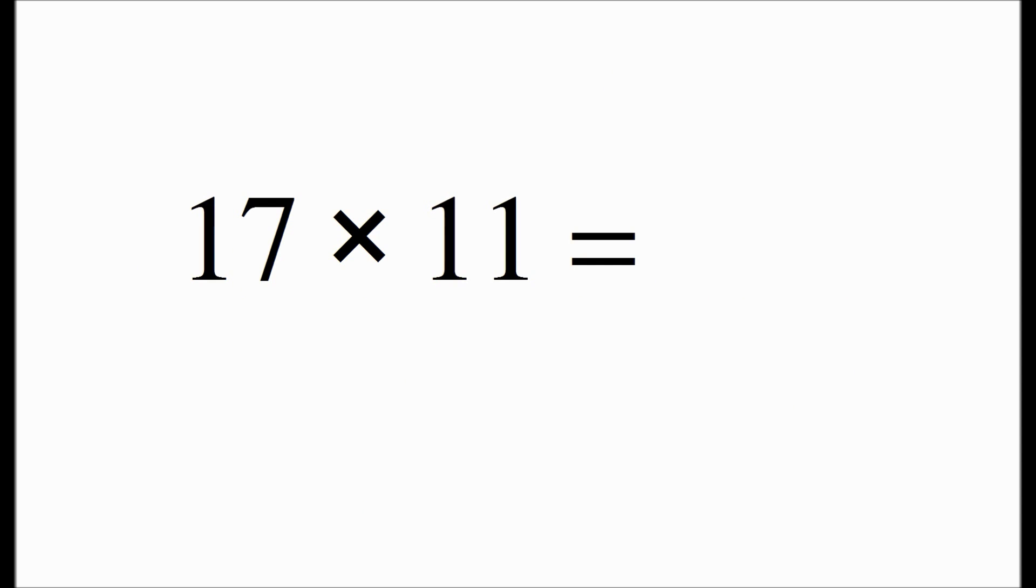But what if you want to multiply a two digit number by 11? The trick involves three steps. First, you copy the first digit of the number. The second step is to add the two digits of the number. Then you copy the last digit of the number, and that's your answer. 17 times 11 is 187.